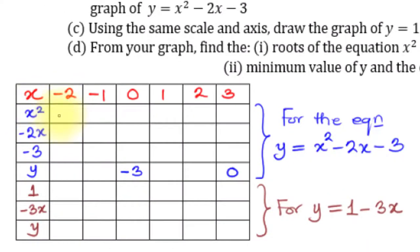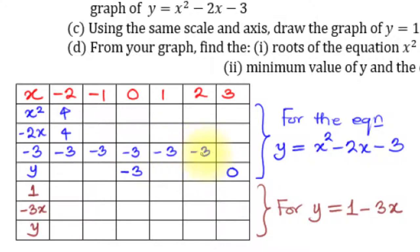When x = -2: x² = 4, then -2x = -2 × -2 = +4 (because two negatives multiply to a positive, and 2 × 2 = 4), and -3 is a constant. So 4 + 4 = 8, and 8 - 3 = 5. The value of y when x = -2 is 5.